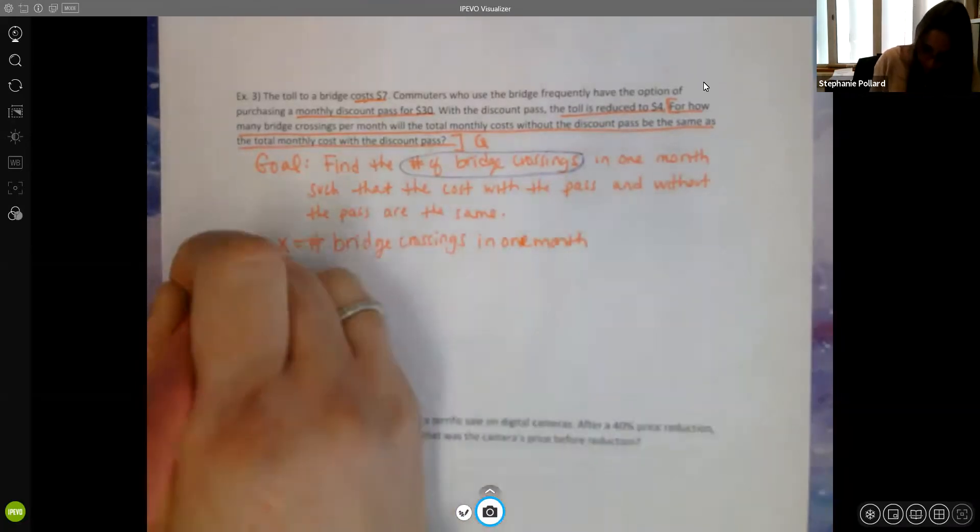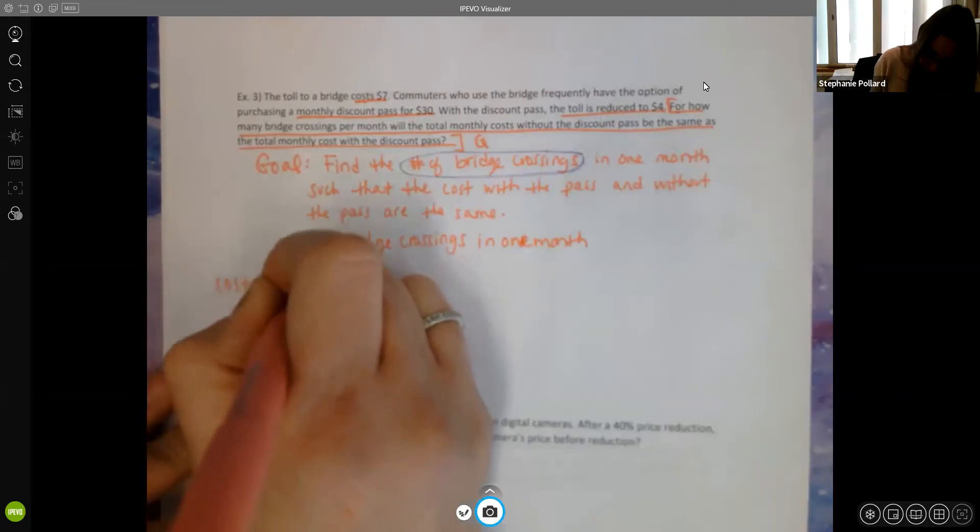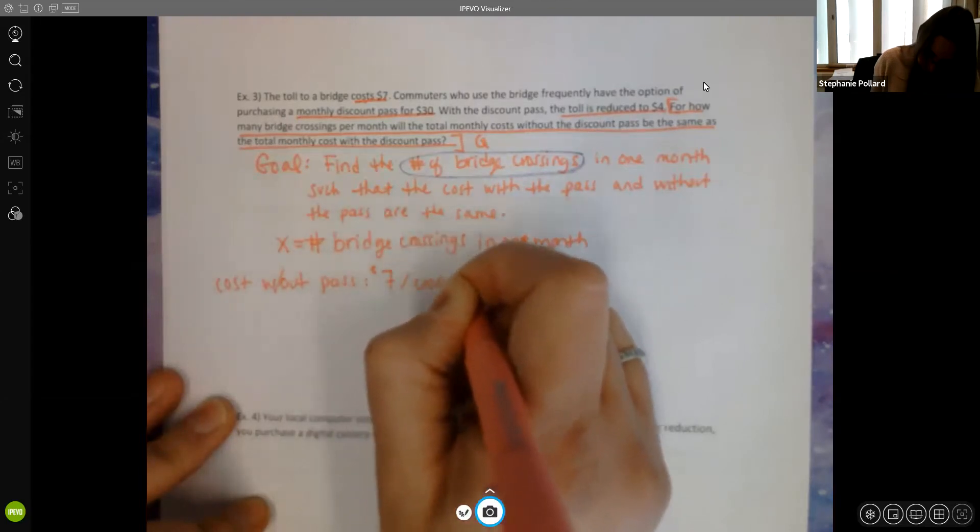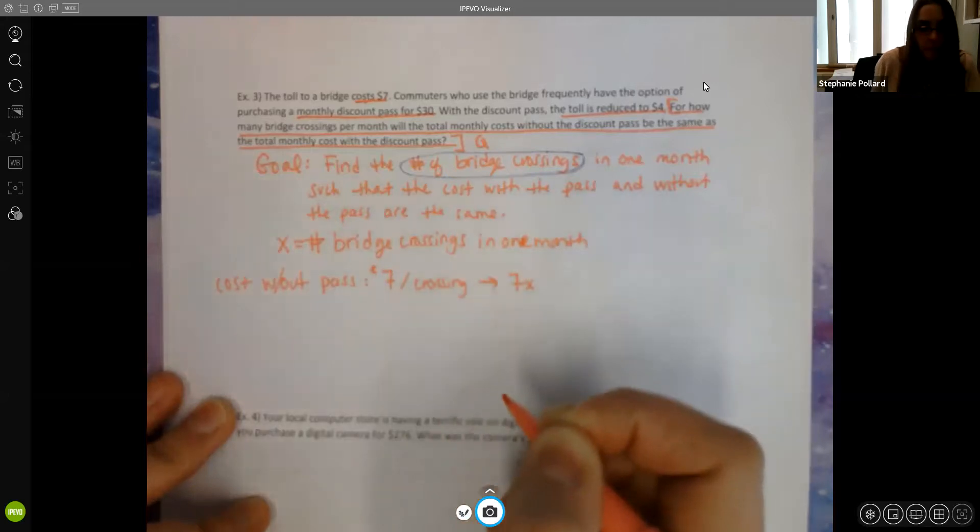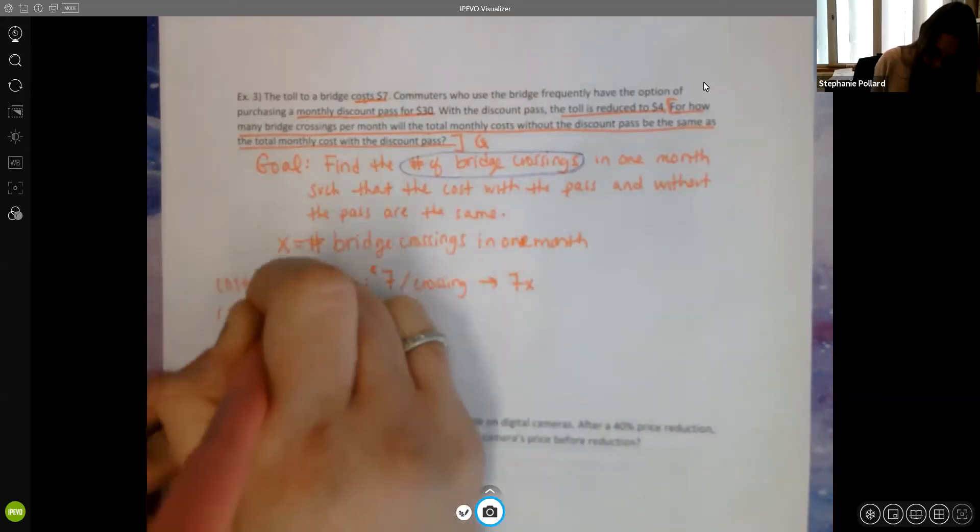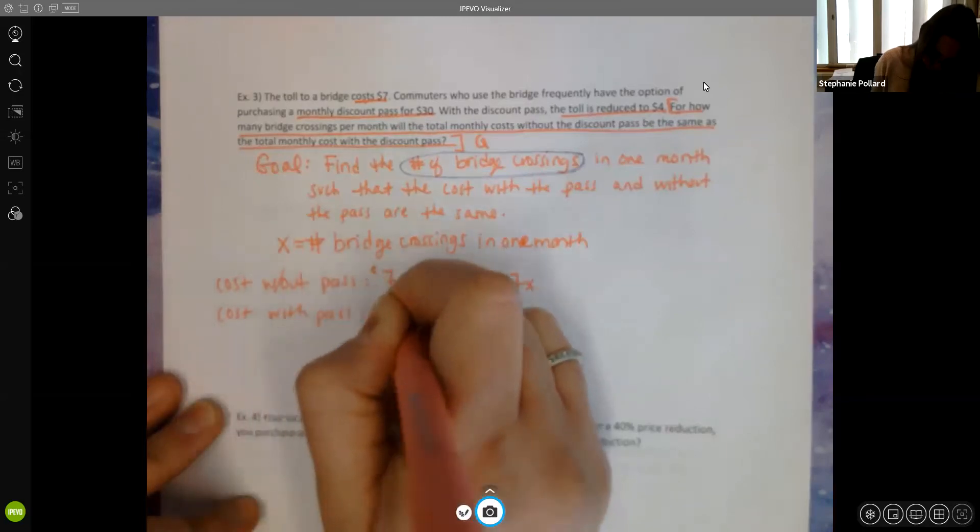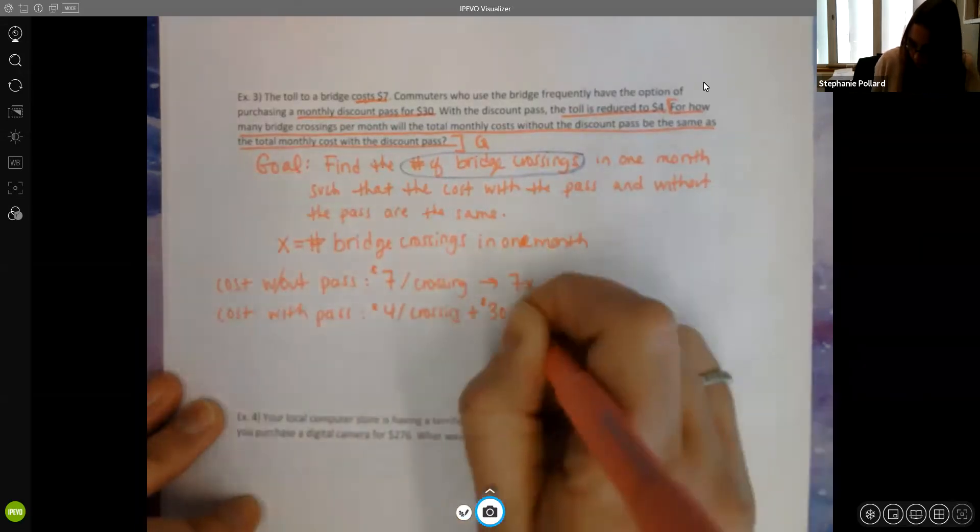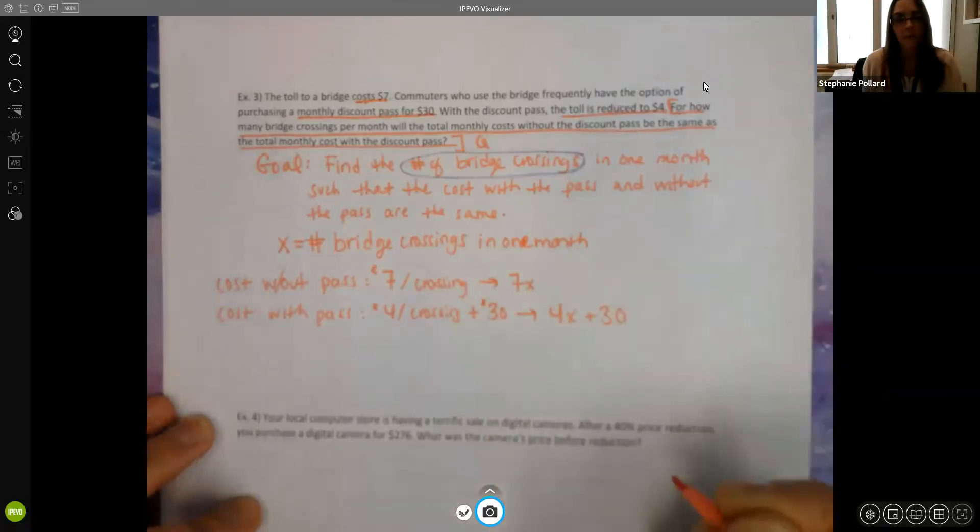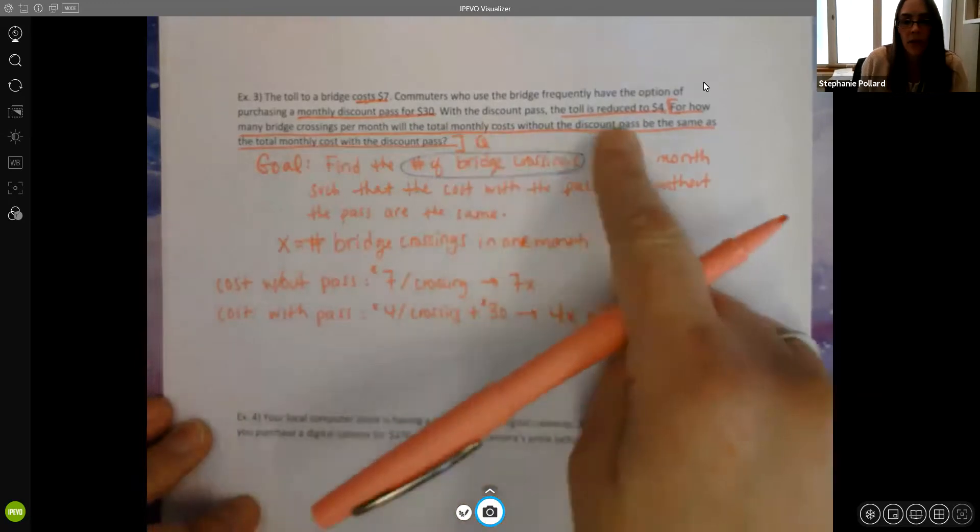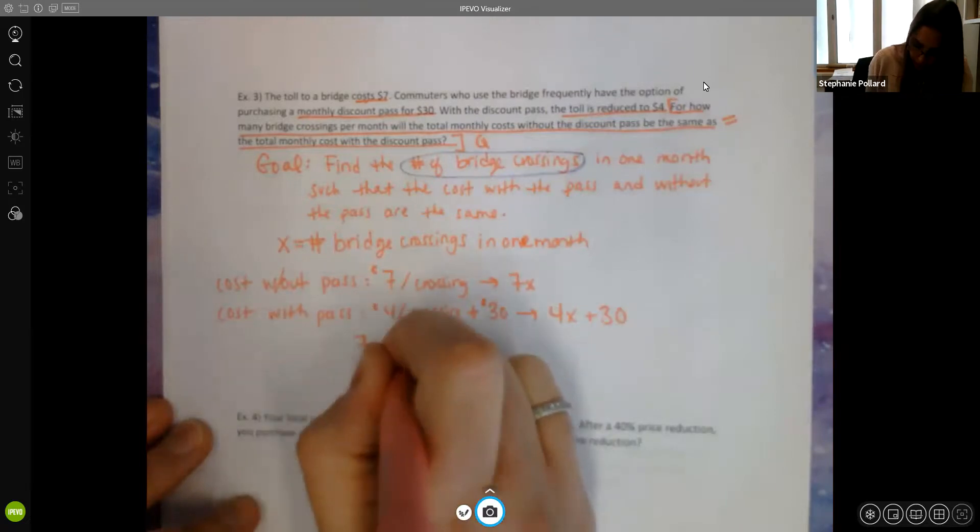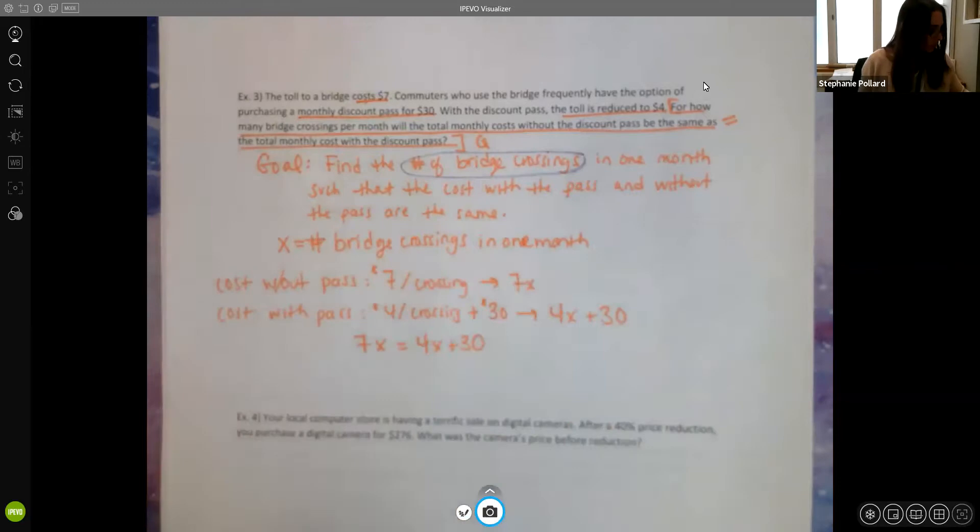So let's think about this. Our cost without the pass would be $7 per crossing. So using my variable that becomes 7x. The cost with the pass is only $4 per crossing, but you have to buy the pass for $30 first. So we get here is 4x plus $30. And we want to know when are they going to be the same. So the same means equals. So we're looking to solve here, when is 7x equal to 4x plus $30?